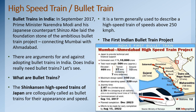In September 2017, the Prime Minister and his Japanese counterpart laid the foundation stone of the ambitious bullet train project connecting Mumbai and Ahmedabad. Bullet trains, or Shinkansen high-speed trains, are termed 'bullet' because of their speed and appearance; they generally operate at speeds above 250 km per hour. India's first bullet train project has a maximum speed of 350 km/h, maximum operating speed of 320 km/h, a journey time of about 2 hours, and was planned for completion by 2023.